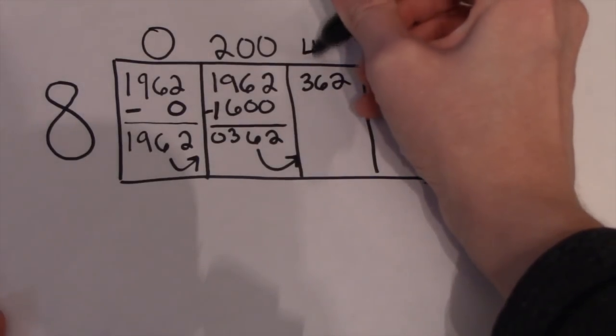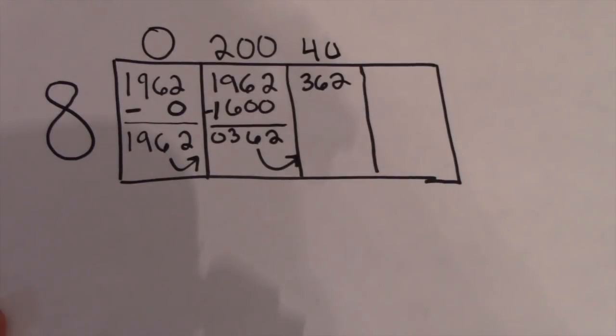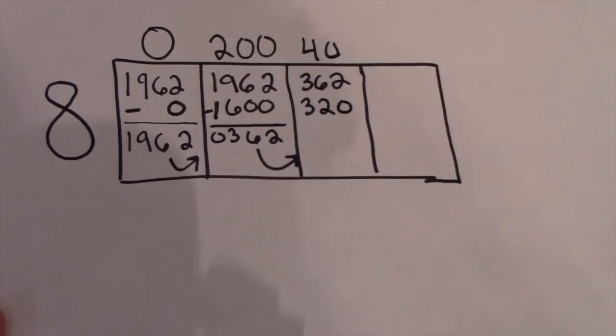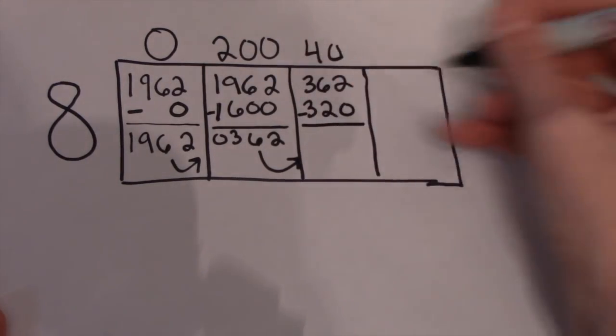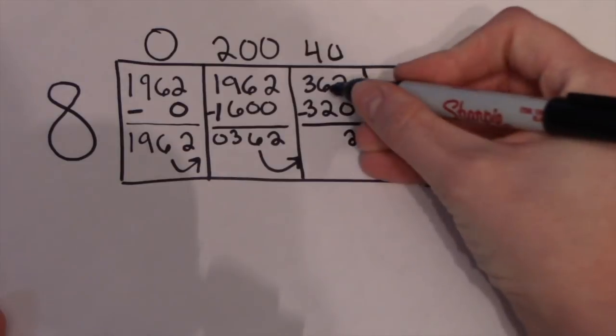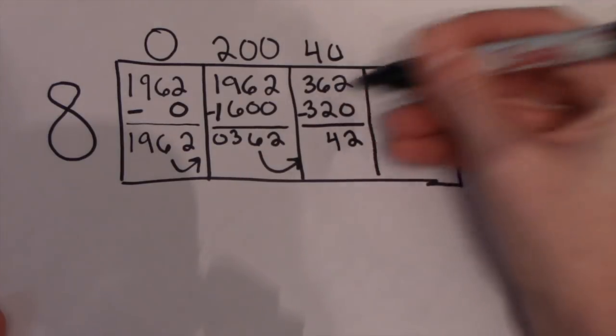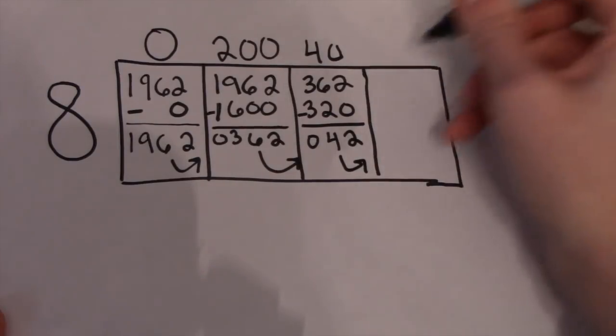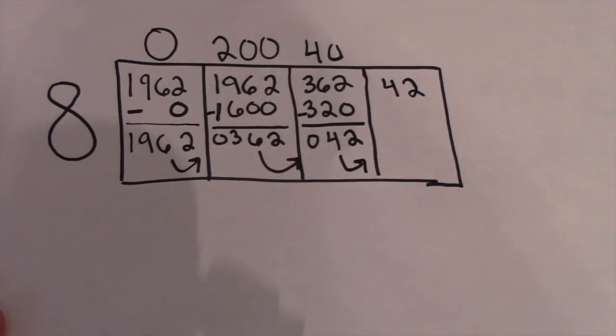Now we're looking for how many times we can fit 8 into 362. Down the multiples we go. 320, 400, oh no, it exploded. 320 is our max. 320 just so happens to be 8 times 40. So we are going to go ahead and subtract 320 from 362. And I'm not even going to walk us through this one because I trust you.